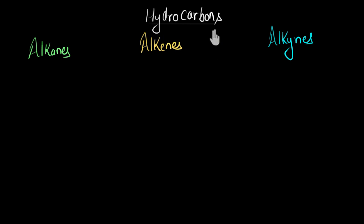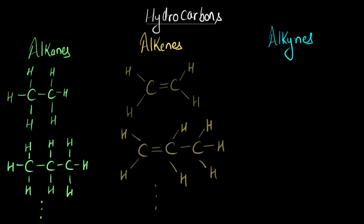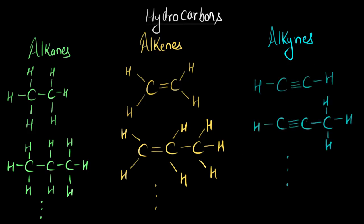Let's learn how to name hydrocarbons — basically those that belong to the families of alkanes, alkenes, and alkynes. Alkanes are hydrocarbons which only have single bonds between carbon atoms. Alkenes are hydrocarbons which have at least one pair of carbon atoms with a double bond between them. And alkynes have at least one pair of carbon atoms with a triple bond between them. There are so many of them, which is why we need to name them.